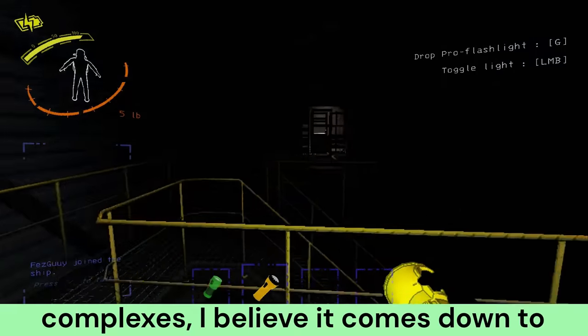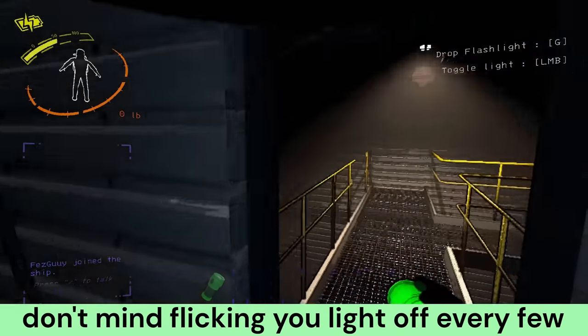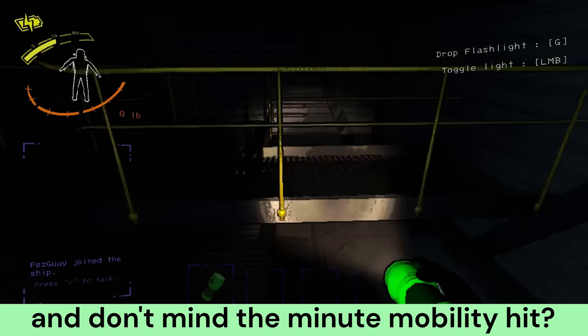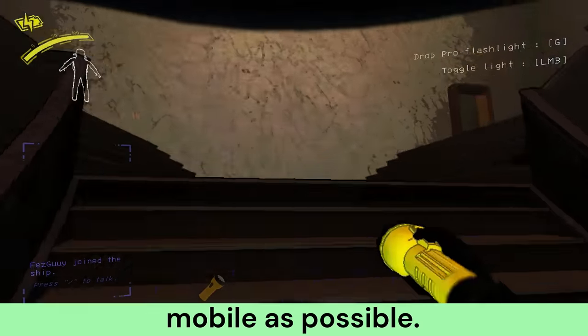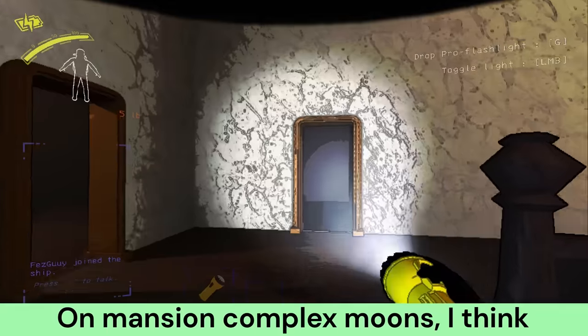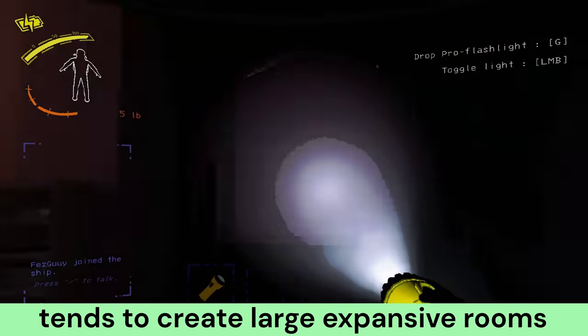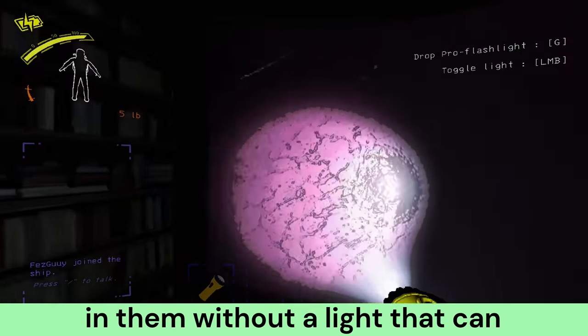I personally consider flashlights to be the only item you should always carry when possible. On industrial complexes, I believe it comes down to a matter of preference. On mansion complex moons, I think the pro is stronger, as the map generation tends to create large expansive rooms and deep hallways that are difficult to navigate without a light that can effectively illuminate them.